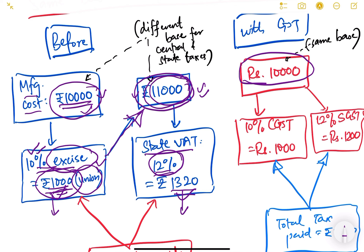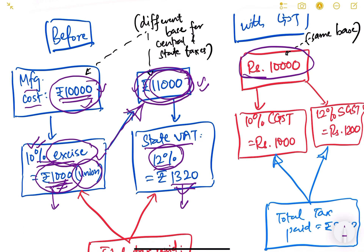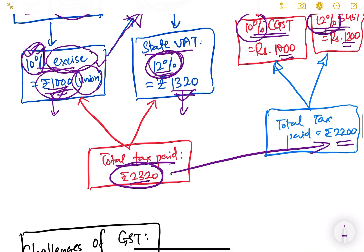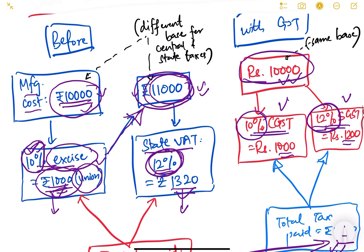After GST, on a manufacturing cost of ₹10,000, there is no separate excise or VAT — just GST, which is CGST plus SGST. Using the same rates for comparison — CGST at 10% and SGST at 12% — both are computed on the same base of ₹10,000. So CGST is ₹1,000 and SGST is ₹1,200, giving a total tax of ₹2,200. Comparing: before GST the total tax was ₹2,320, after GST it is only ₹2,200. Tax liability has reduced and both central and state taxes are calculated on the same base.